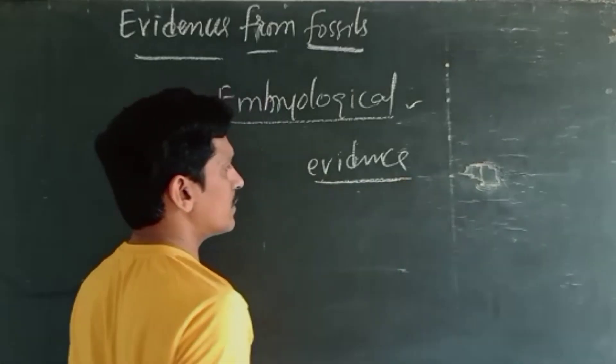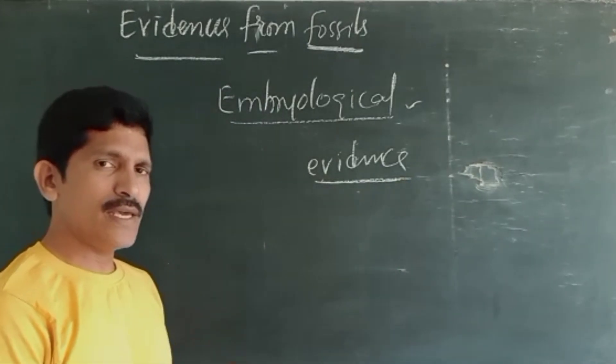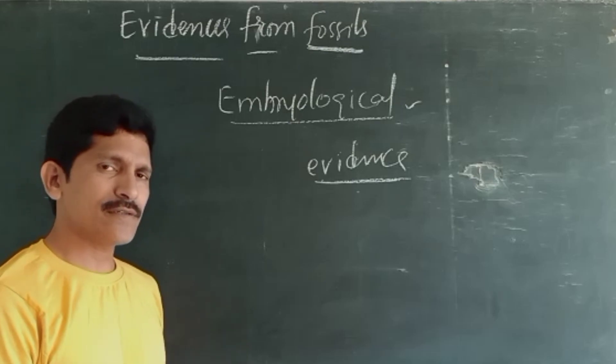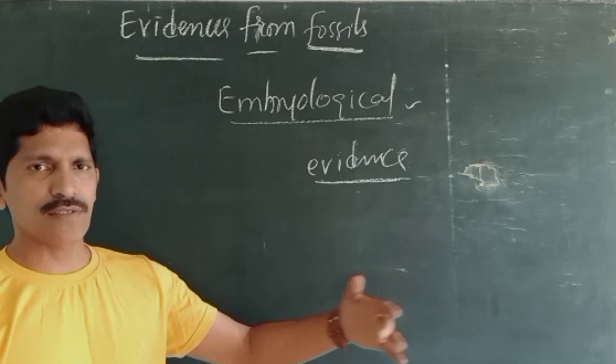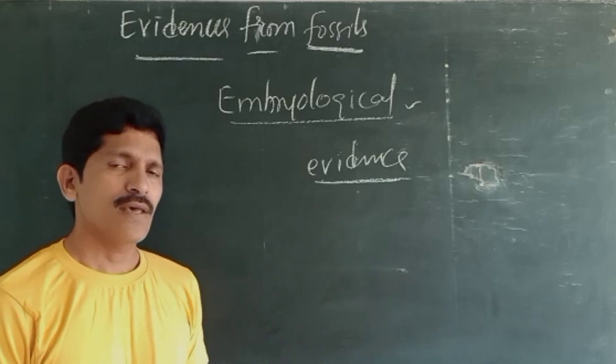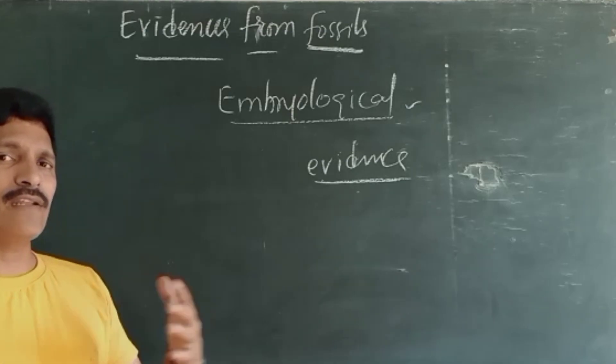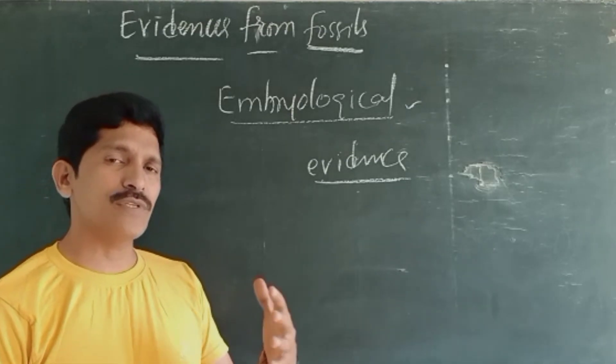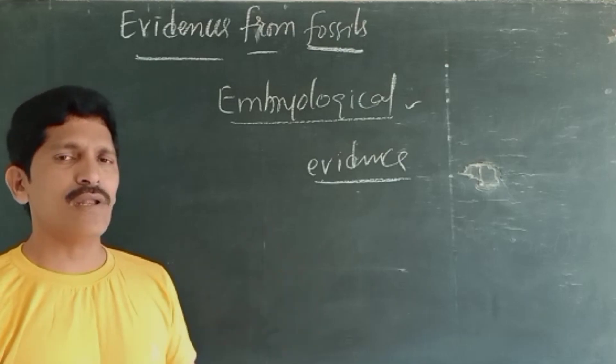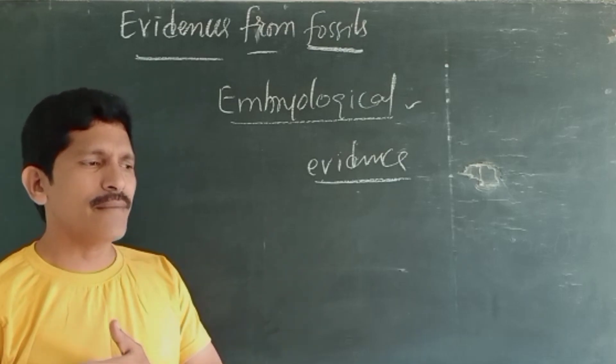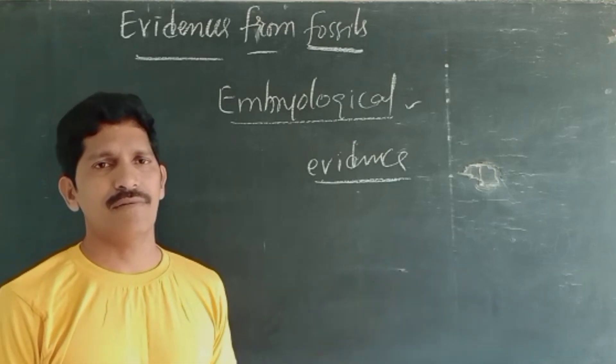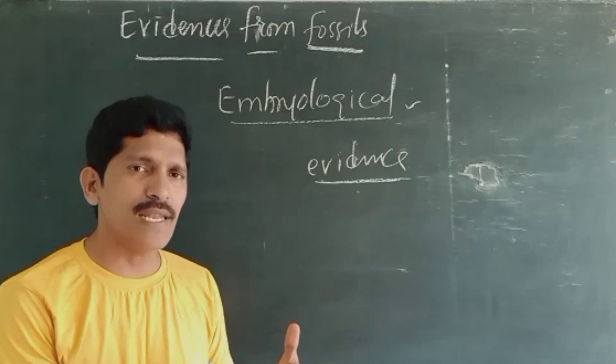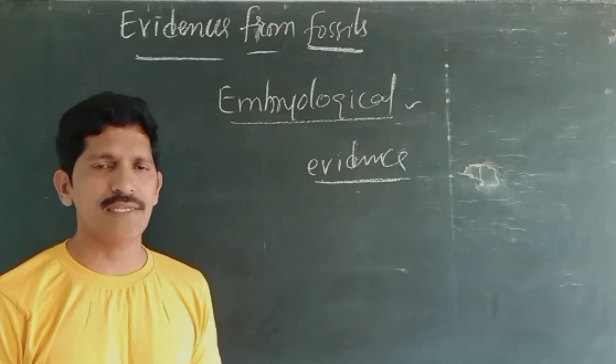And when we observe the human beings and cheetah and bat and whale and pig and salamander and like that, if you take a few embryos, you cannot identify which embryo belongs to which species. Why? Because at the embryological stage, all the embryos are very much similar. They have very close similarities, majority of similarities they are having.